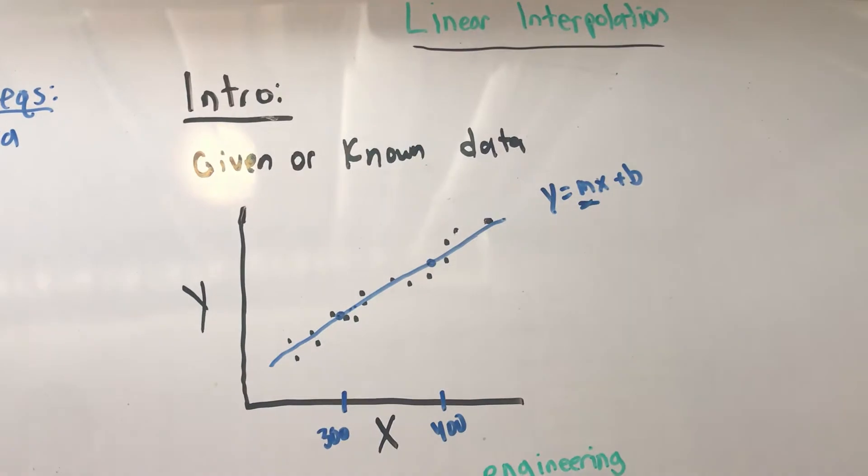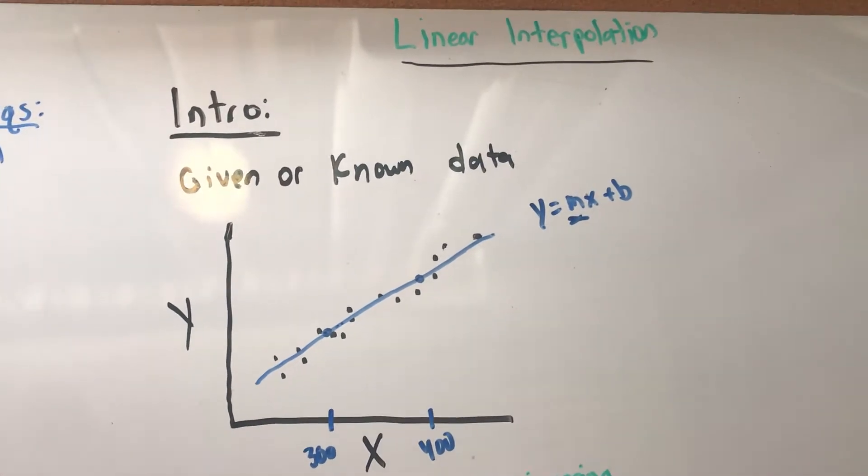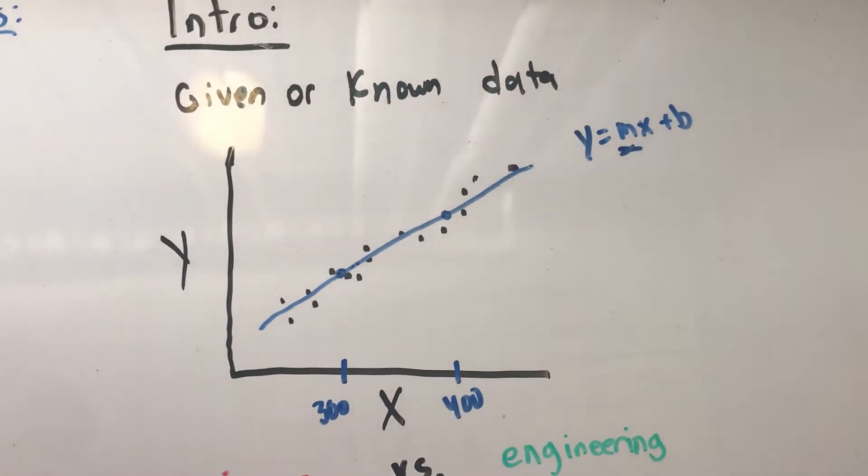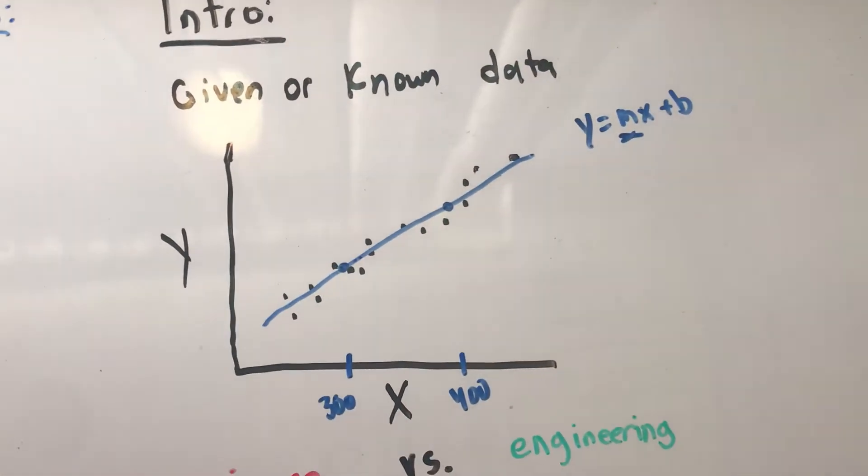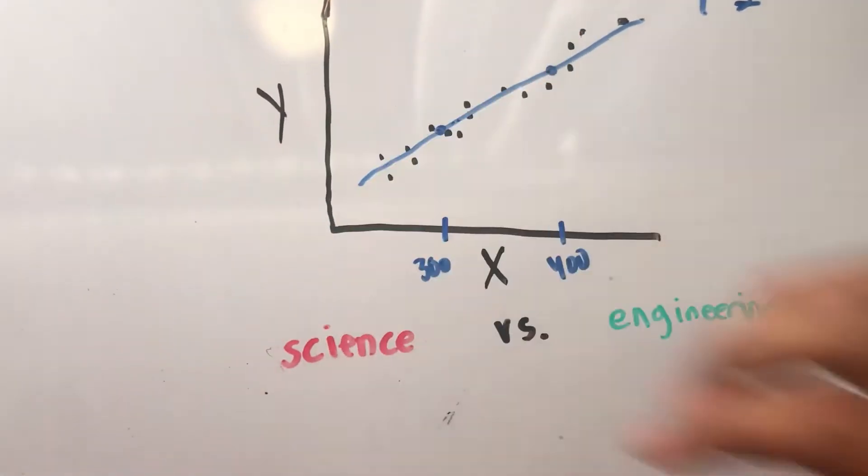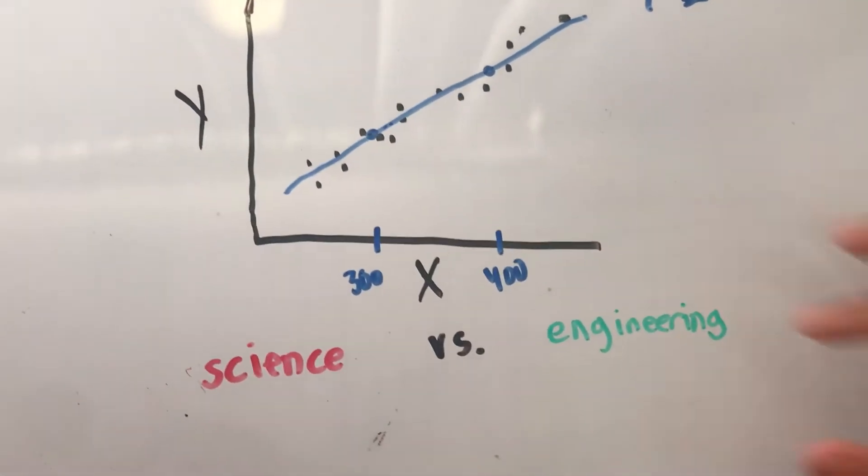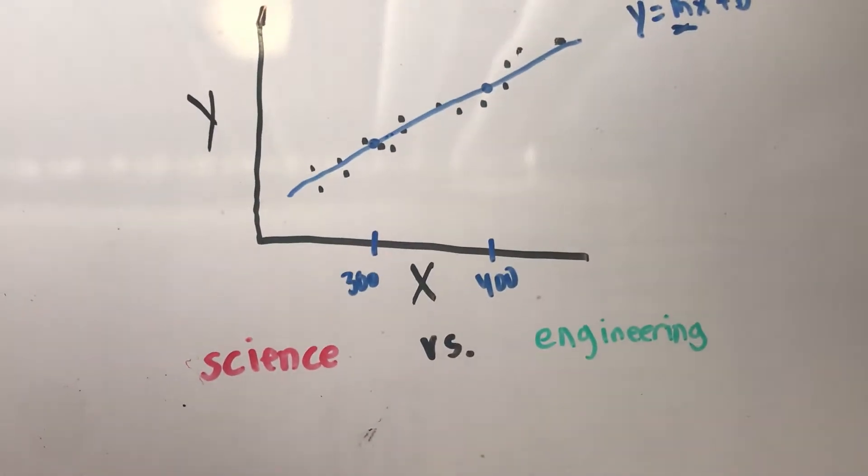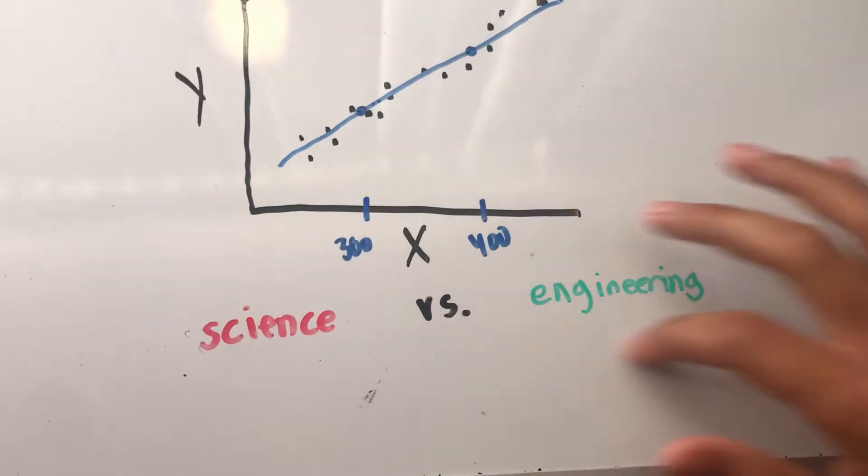That's why it's called interpolation—you're interpolating between two known points. In future classes, we're going to use different methods to become more exact, but right now this is just an estimate. That's the difference between science and engineering, in which science is a very theoretical exact approach and engineering is using estimates and approximations.